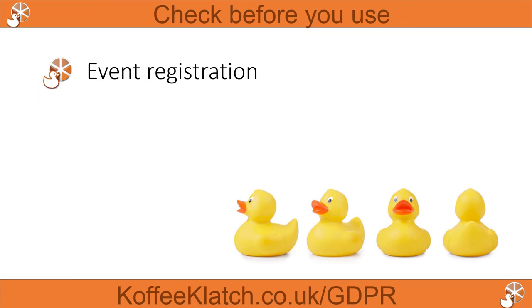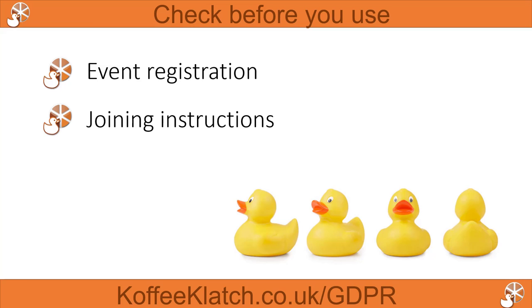Check before you use data about delegates what the event registration said. If it doesn't name your organisation as a third party with whom information is going to be shared, you should not use this data without getting consent from the delegates directly. You can also look at the joining instructions. If the joining instructions say we're going to need to send the following information through certain people and your name is there, as long as you're only accessing that information and your reason for accessing it is to deliver the event, you should be OK. This does not cover you for adding people to a newsletter or marketing at a later stage.